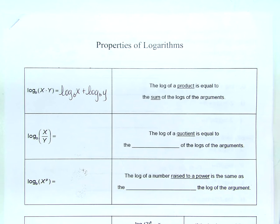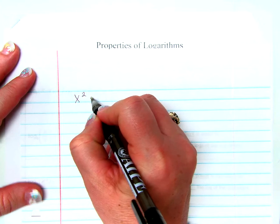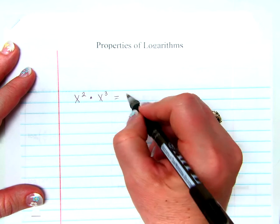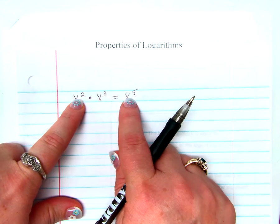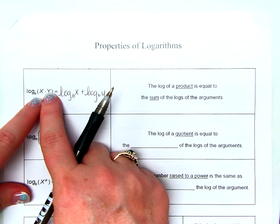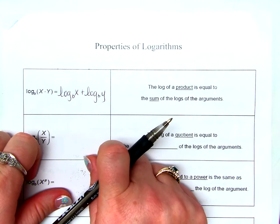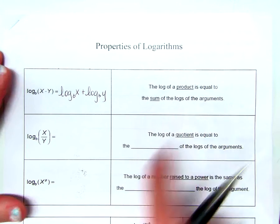If that seems familiar to you, it should, because when we studied exponents, we said x raised to the second power times x raised to the third power equals x raised to the fifth power. When we multiply like bases, we added the exponents. So when we're multiplying arguments and we want to separate those two arguments, we separate them by adding their individual logarithms. The log of the product is equal to the sum of the log of the arguments.